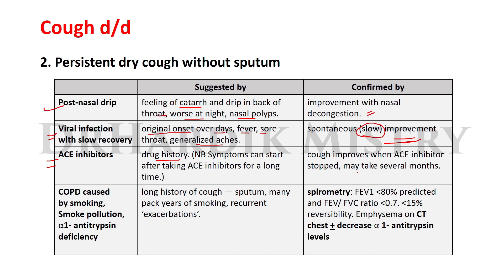ACE inhibitors as a cause of dry cough is suggested by drug history and confirmed by improvement in cough when the ACE inhibitor is stopped, which may take several months. COPD due to smoking, smoke pollution, or alpha-1 antitrypsin deficiency presenting as persistent dry cough without sputum is suggested by a long history of cough, many years of smoking, and recurrent exacerbations. It is confirmed by spirometry showing FEV1 less than 80%, FEV1/FVC ratio less than 0.7, reversibility less than 15%, and emphysema on CT chest with possible decreased alpha-1 antitrypsin levels.